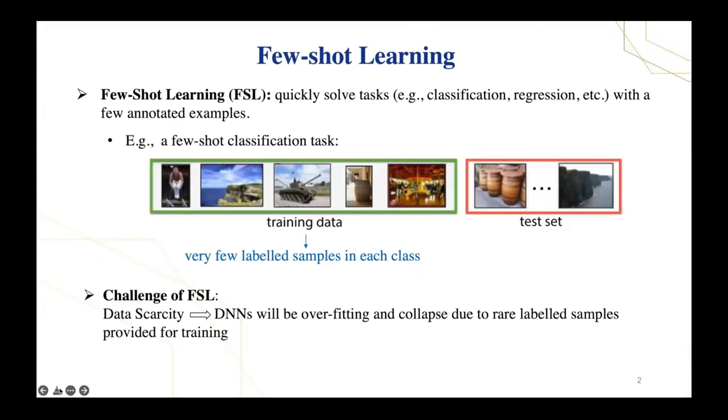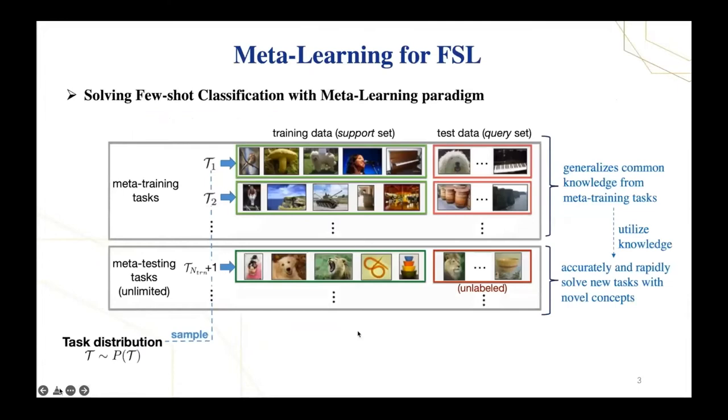More recent works solve few-shot learning in meta-learning paradigm, treating each few-shot task as an instance sample from a task distribution. The key idea is to generalize common knowledge about this task distribution from meta-training few-shot tasks and utilize the knowledge to help accurately and rapidly solve new tasks.